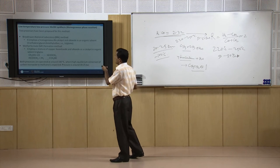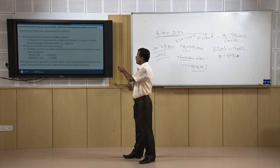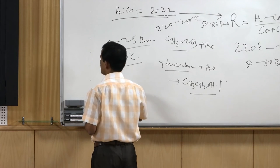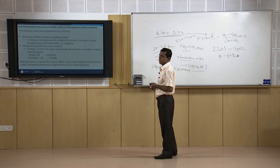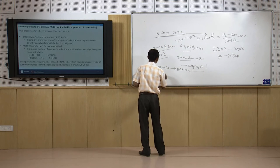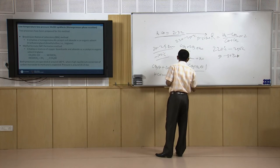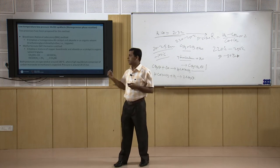Two catalysts have been developed for homogeneous low-temperature, low-pressure methanol synthesis. The BNL method — Brookhaven National Laboratory method — uses nickel catalyst in the solvent tetraglyme. Another is the methyl formate formation method, which uses copper-based oxides and alkoxides in a solvent: CH₃OH reacts with CO to form methyl formate (HCOOCH₃), which then reacts with hydrogen to give methanol. Although these processes require less temperature and pressure, they are not yet commercially used.